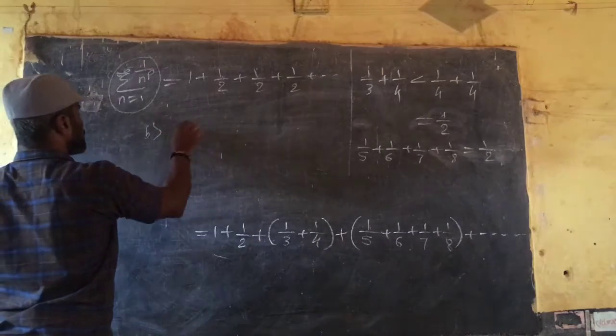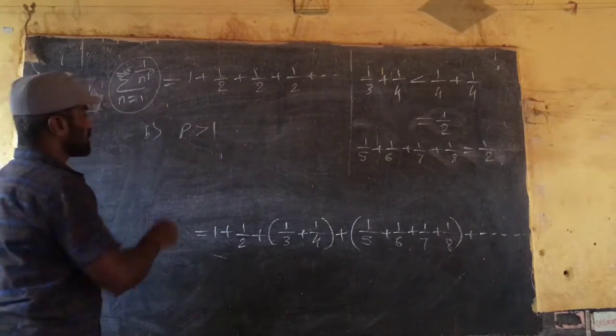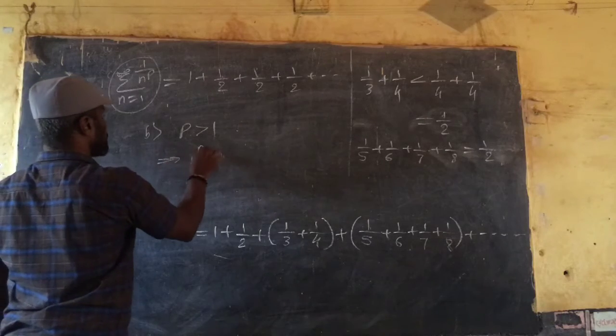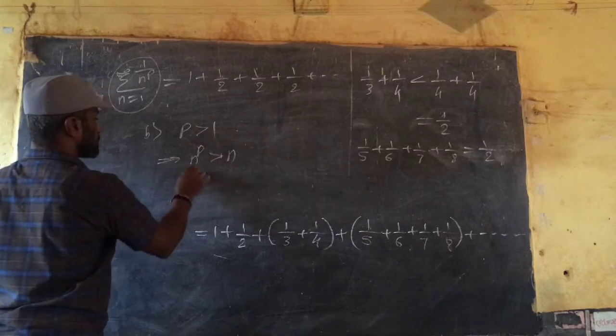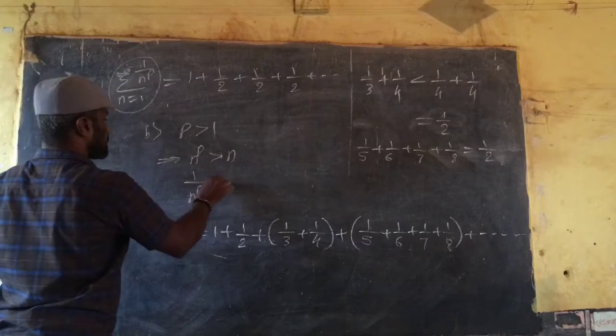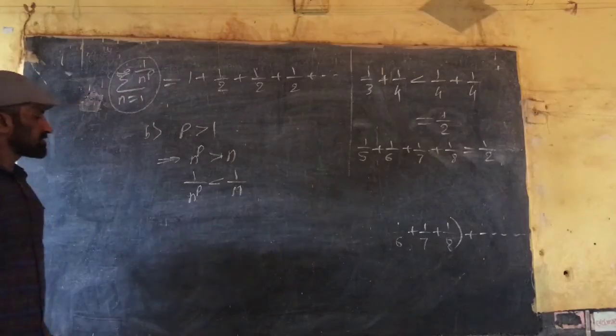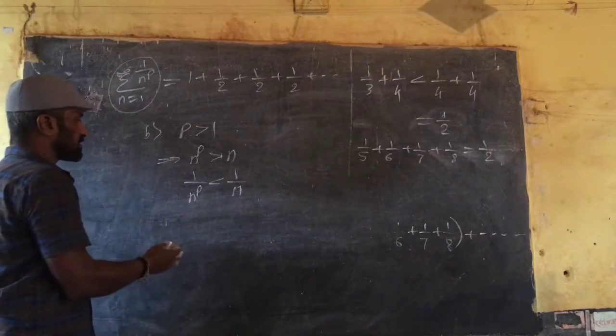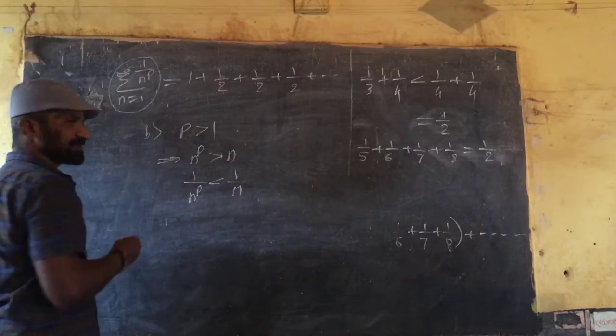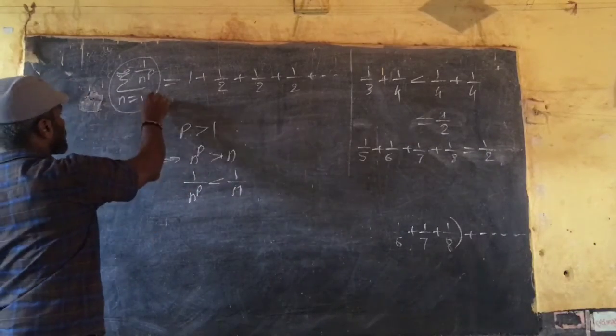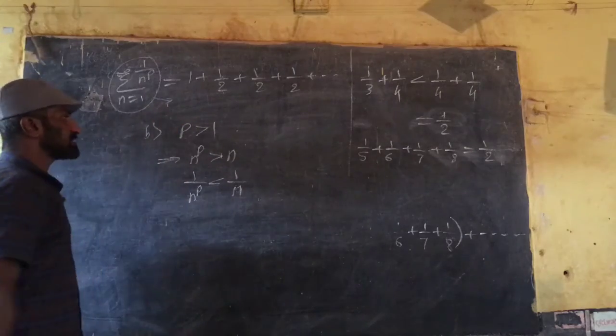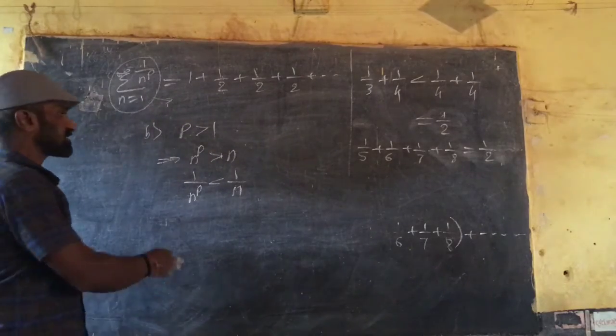Case 3, p power 2, p is bigger than 1. I can write n raised to p is bigger than n. Reverse Markovtini, 1 by n raised to p is less than 1 by n. This shows that every term is corresponding to the next corresponding terms. By using geometric series, we conclude that again this series is convergent when p is greater than 1. This completes p series.